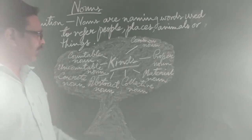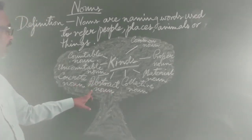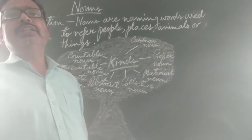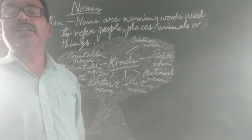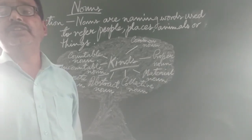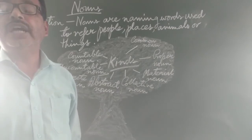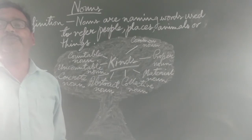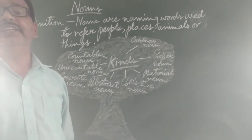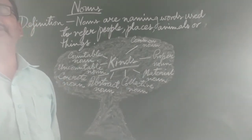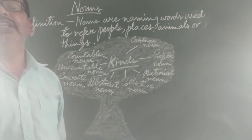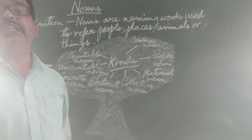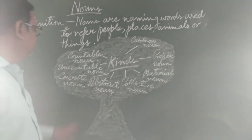So these are Collective Naam. Now we will move to Abstract Naam. What is an Abstract Naam? It is something that we can't see or touch — we can only feel it. For example: friendship, anger, jealousy, kindness. These are feelings that we can neither see nor touch; we can only feel them, so they are abstract.